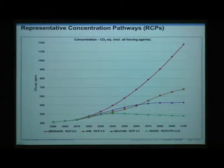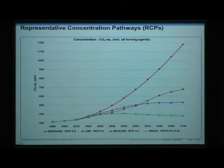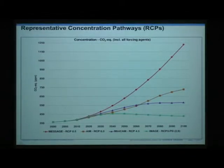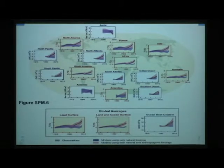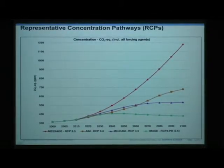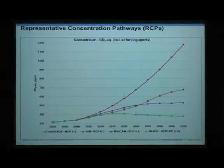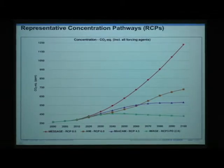Looking at projections of sea level and acidification into the future, we have to talk about what we call representative concentration pathways. We have to make assumptions about what carbon dioxide is going to do in the future — we could leave it at where it is right now, which is essentially what this green line is, where we don't really increase it much more over the next coming decades, or we could continue growing as we have been, and that's kind of this red line here.